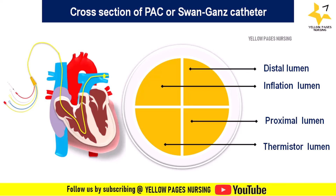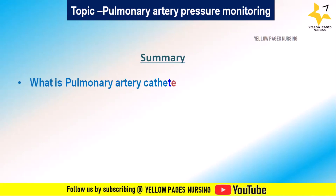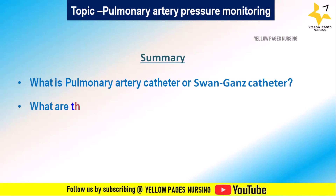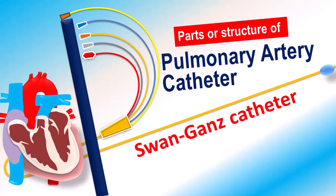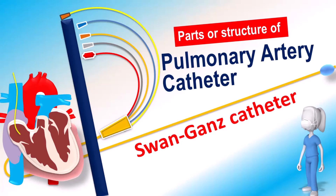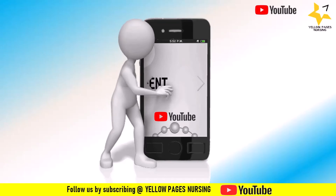This is a short video on the parts of the pulmonary artery catheter, and we will be discussing pulmonary artery pressure monitoring in detail in our upcoming videos. So far we have discussed what is the pulmonary artery catheter or Swan-Ganz catheter, what are the indications for pulmonary artery pressure monitoring, and what are the parts of the pulmonary artery catheter and their functions. If you find this video useful, please like it, share it, and subscribe, and do not forget to hit the bell icon. Thanks for watching and have a nice day.